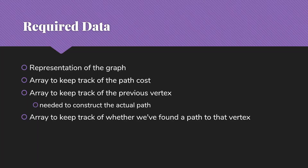We also need an array to keep track of whether we've actually found a path to each vertex. And then finally we need a queue. The central data structure for breadth-first search is in fact a queue. This is how we're going to go through and look at all the things that are just one edge away, then all the things that are two edges away, then three edges away, and so on. The queue is perfect for helping us do that.